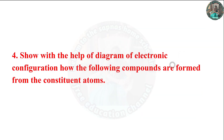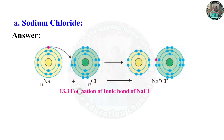Question 4: Show with the help of a diagram of electronic configuration how the following compounds are formed from the constituent atoms.